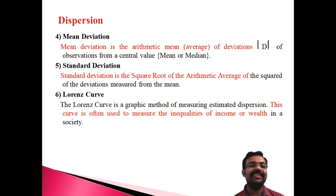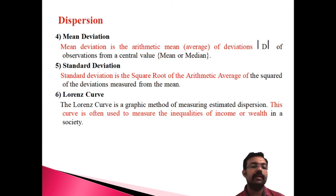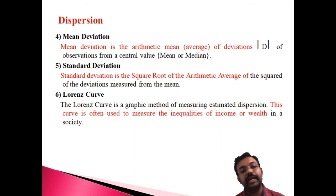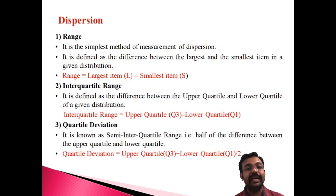The sixth measure is the Lorenz curve. The Lorenz curve is a curve showing the inequality of income or wealth in a society. It represents a single line expressing the upper curve and lower curve, measuring inequality of incomes or wealth. These are the different tools used for dispersion.